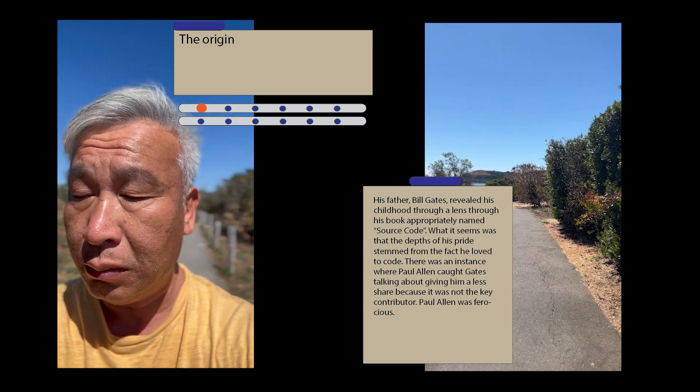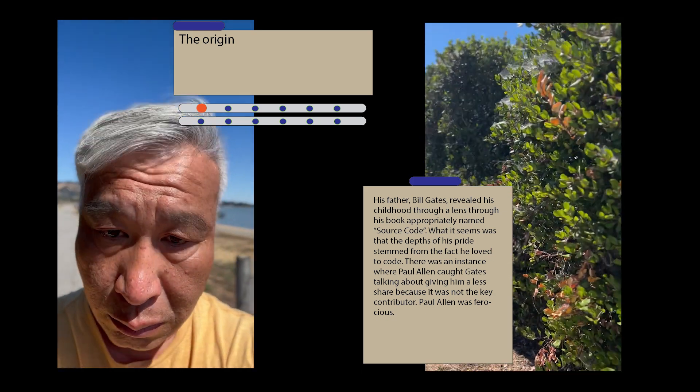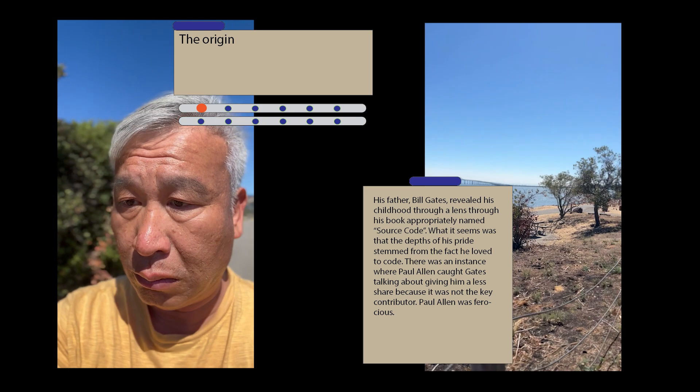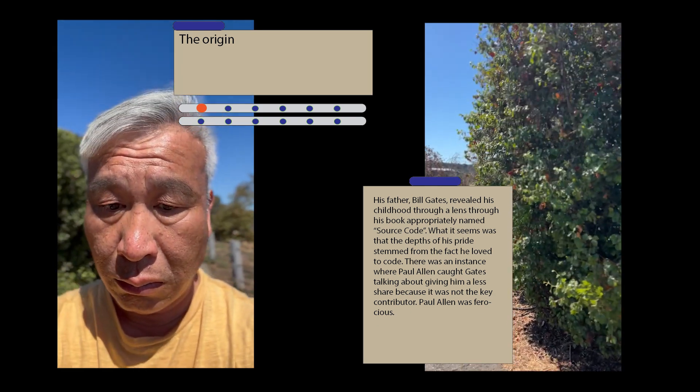His father, Bill Gates, revealed his childhood through the lens of his book appropriately named Source Code. What it seems was that the depth of his pride stemmed from the fact he loved to code.